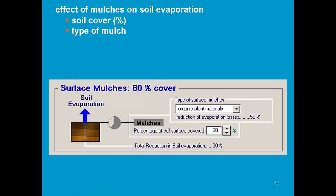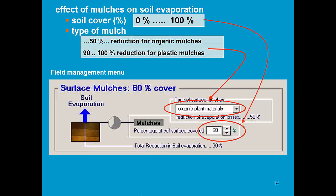When specifying mulches, we have to specify the soil cover and the type of mulch. The soil cover can vary between 0 and 100%. And depending on the type of mulch, the reduction in evaporation will be different. It will be about 50% for organic mulches and 100% for plastic mulches.